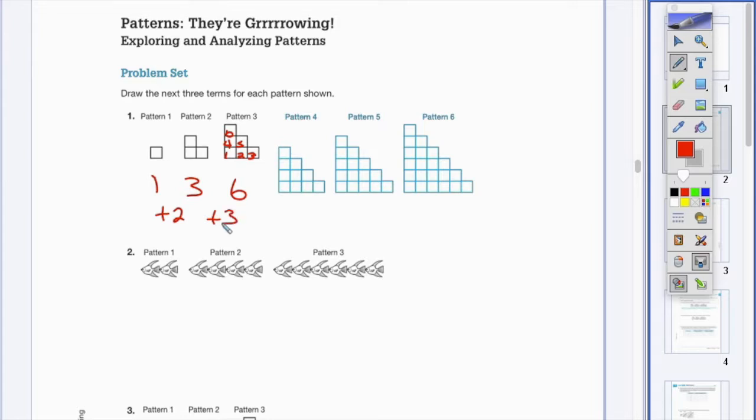Another way to look at that is maybe we're multiplying by three, right? One times three is three. Oh no, wait, that doesn't work. Three times three is not six.